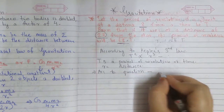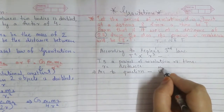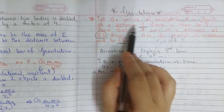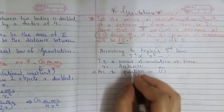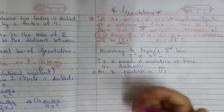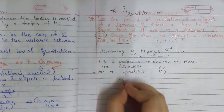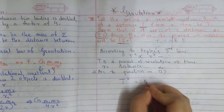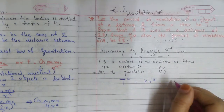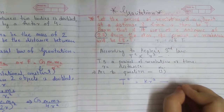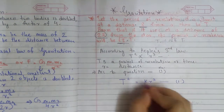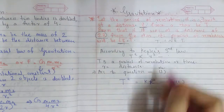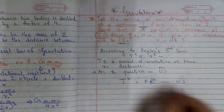Now we will write according to the question. According to statement 1, when the distance is R, we write: T² = kR³. This is our Equation 1, where we use capital R.